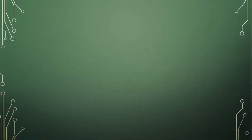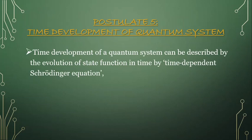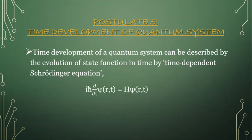So that is the detail about postulate number 4, which depends entirely on measurements and outcomes, and in quantum mechanics these are due to the eigenvalue. Next, let us move on to the last postulate, which is a very important postulate explaining the time development of a quantum system. In order to understand any system in a dynamic state and its time evolution, we need postulate number 5. This time development is described by the evolution of the state function in time using the time-dependent Schrödinger equation: iħ ∂/∂t ξ(r,t) = H ξ(r,t).